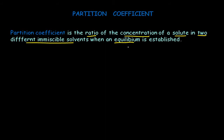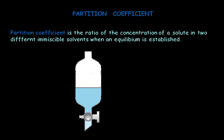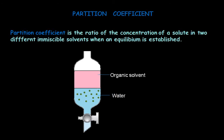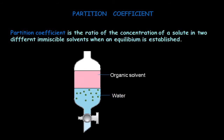Let's understand what we mean by this definition. Suppose in a separating funnel we have taken water as an aqueous solvent with some solute X dissolved in it. We then add an organic solvent on top and shake it. After shaking, two different layers of solvents separate out in the separating funnel, and the solute molecules get distributed between the two solvents, moving between the aqueous solvent and the organic solvent.